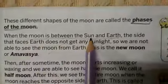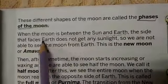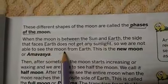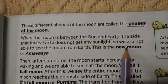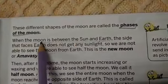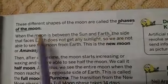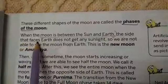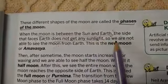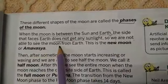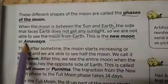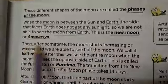When the moon is between the sun and the earth, the side that faces the earth does not get any sunlight, so we are not able to see the moon from the earth. This is called the new moon, or Amavasya.